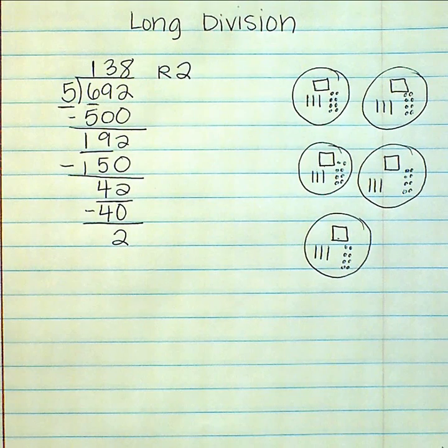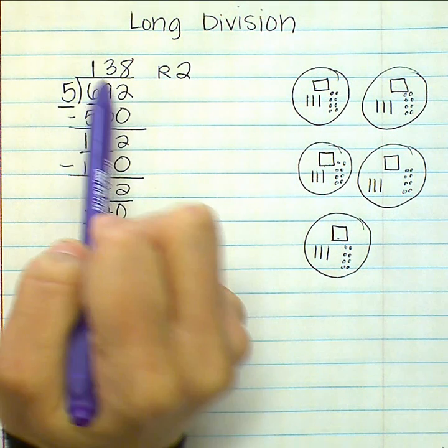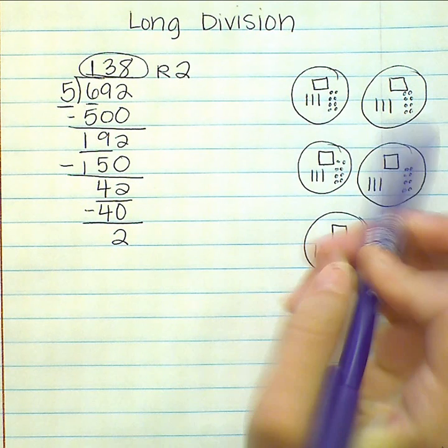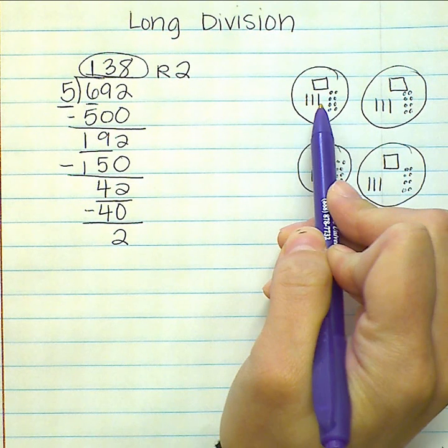I can double-check my answer by making sure my quotient matches each group. And it does: one hundred thirty-eight.